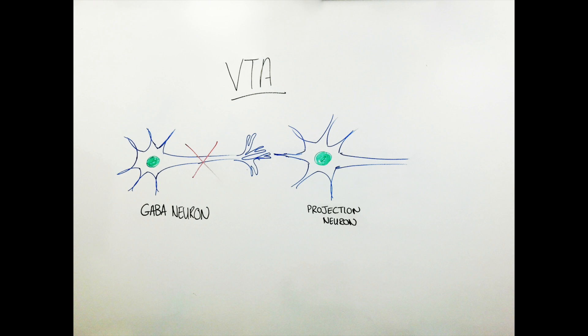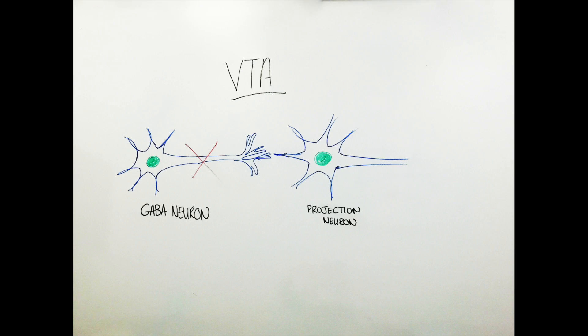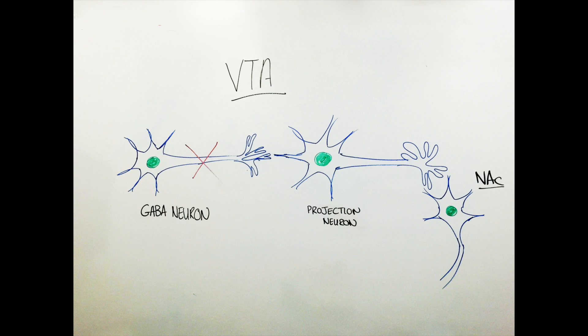This neuron is responsible for releasing dopamine. Once dopamine is released from the VTA projection neuron, it sends the signal to the next neuron located in the nucleus accumbens.